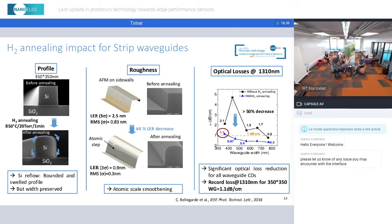We have first evaluated this treatment on strip waveguides. Here the conditions are 850 degrees Celsius and a pressure of 22 Torr, and you can observe the impact of this treatment on the profile, roughness, and optical losses.